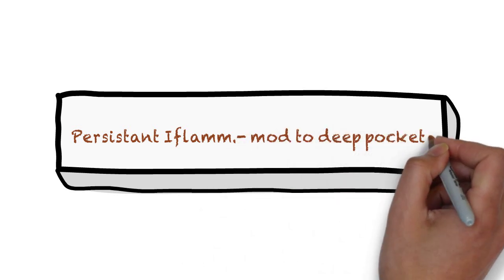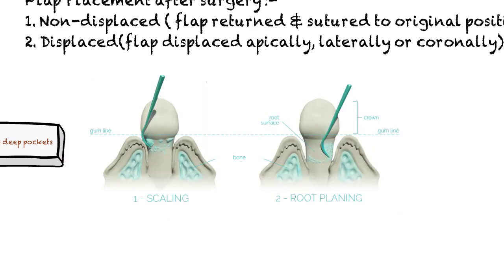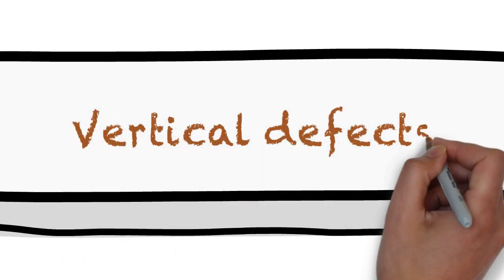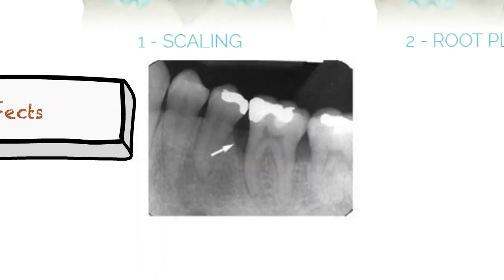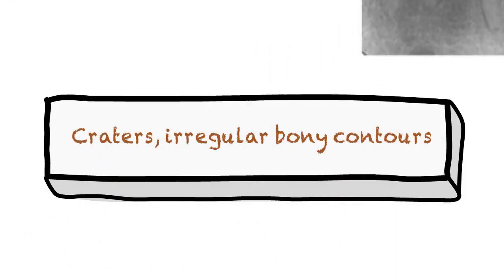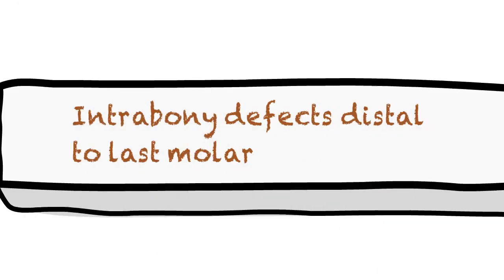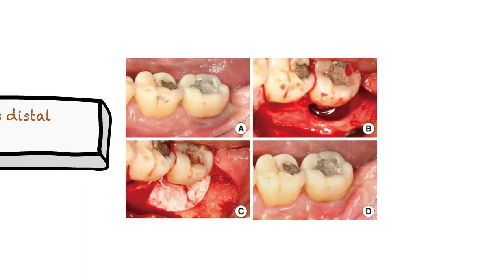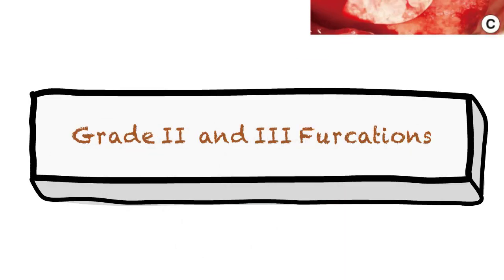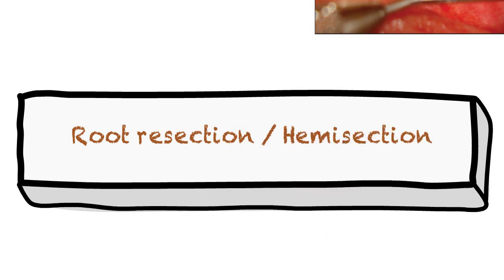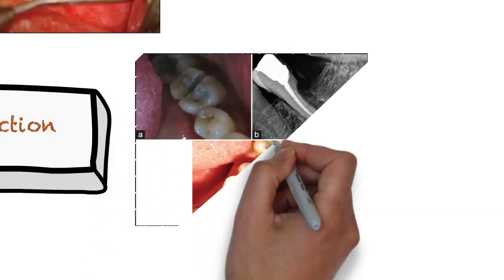So the various indications are: in cases of persistent inflammation in moderate to deep pockets despite scaling and root planing; vertical defects to debride these defects and to evaluate the feasibility of using restorative materials such as grafts and membranes; to correct craters and irregular bony contours; to treat intra-bony defects distal to the last molars; to treat grade 2 and 3 furcation involvement; and finally to perform root resection and hemisection.